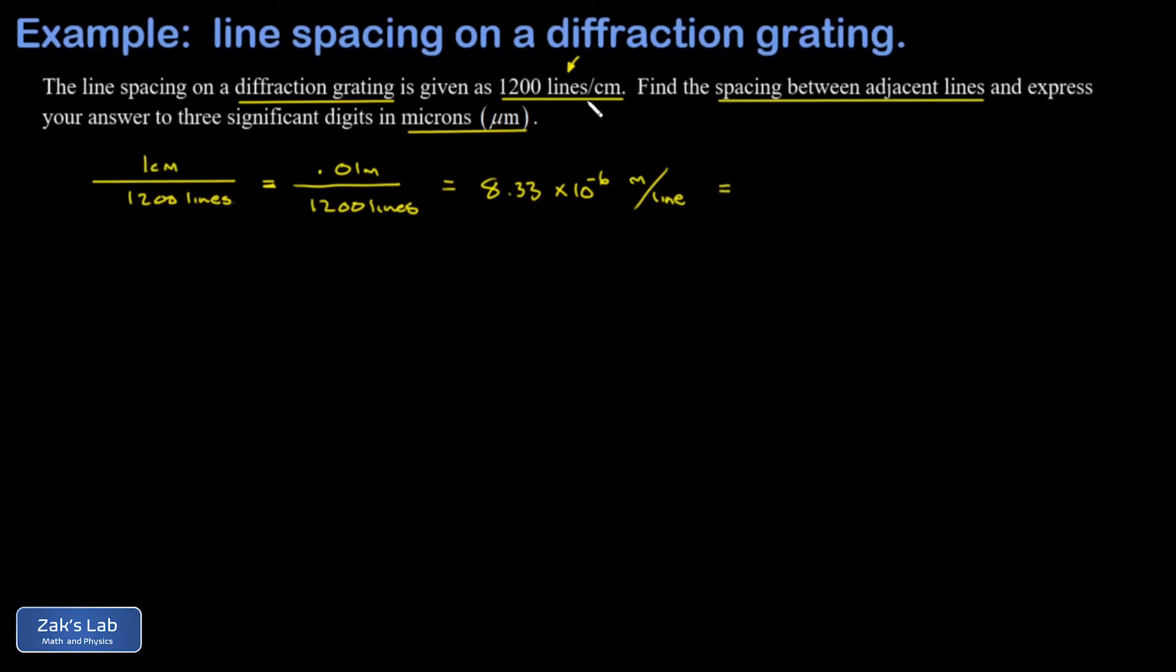Then I have to convert to microns. And there's not much to do here because this factor of 10 to the negative 6 gives me the prefix micro. So I have 8.33 microns or micrometers per line.